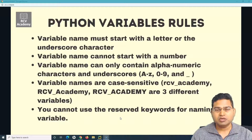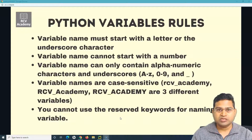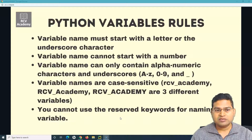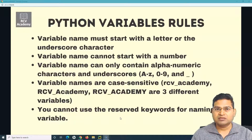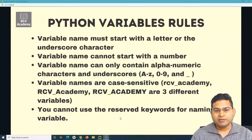The first rule is that the variable name must always start with a letter or the underscore character. Second, you cannot start a variable name with a number. Third, a variable name can only contain alphanumeric characters and underscores — from A to Z, a to z, 0 to 9, and underscore characters.